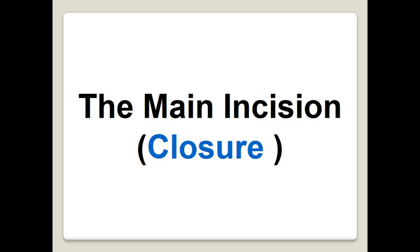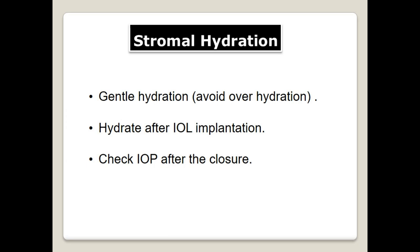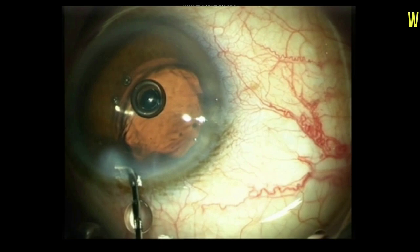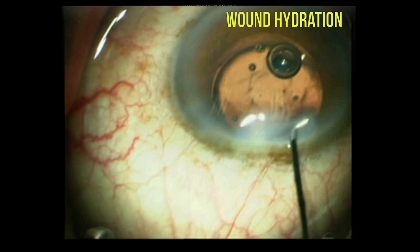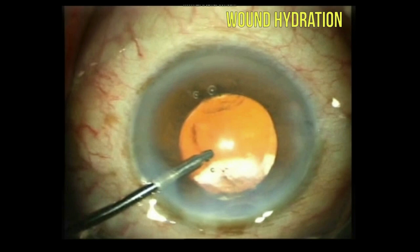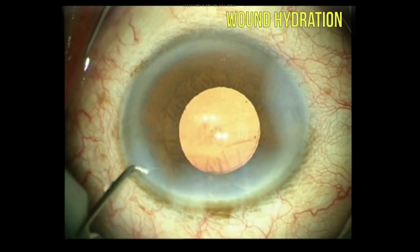Wound closure is achieved via stromal hydration. This hydration causes apposition of the wound roof and floor, and the hydrostatic forces of the corneal endothelial pump help seal the incision. Hydration should be gentle, using a 27-gauge cannula. At the end of the operation, always ensure the eye is well-formed; you can feel the intraocular pressure digitally with your index finger. This video demonstrates stromal hydration. It is better to hydrate the main incision directly after intraocular lens implantation and before viscoelastic removal, as it is easier and the anterior chamber is more stable.